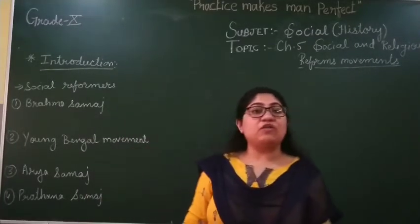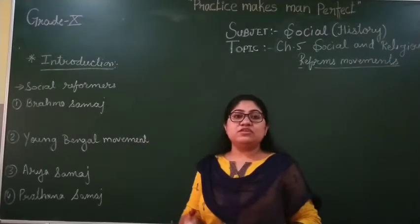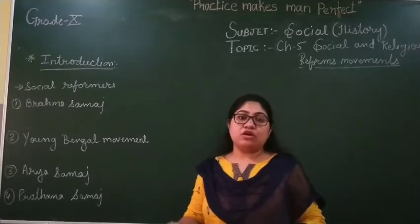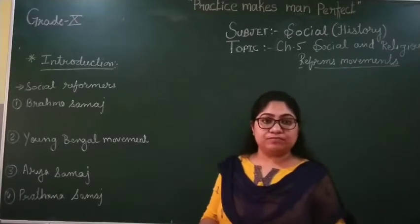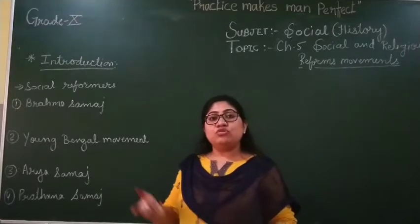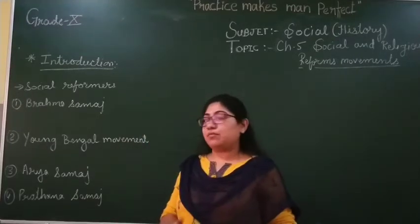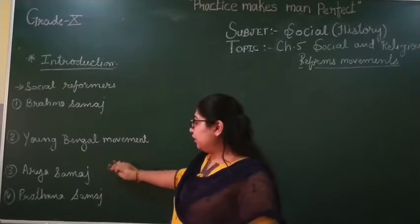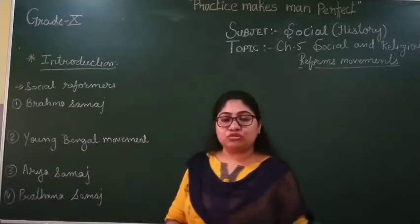In this chapter we are covering some points: what is the Social and Religious Reform Movement, where they started and how they started, and who are those persons who started all this work. The famous Social Reformers started some movements and some Samaj. First we have Brahma Samaj, then the Young Bengal Movement.